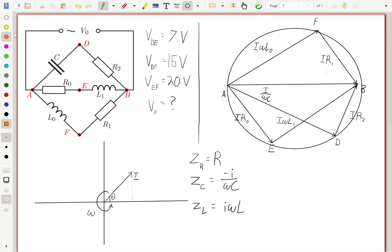Because here, we're given new information. We have the potential difference from D to E is 7 volts. So what we can do is say that the distance there is going to be 7 volts. Then it tells us that the potential difference from D to F is 15 volts. So we can represent it on the complex plane like that, and say that it is 15 volts. And finally, we have the potential difference from E to F as 20 volts.